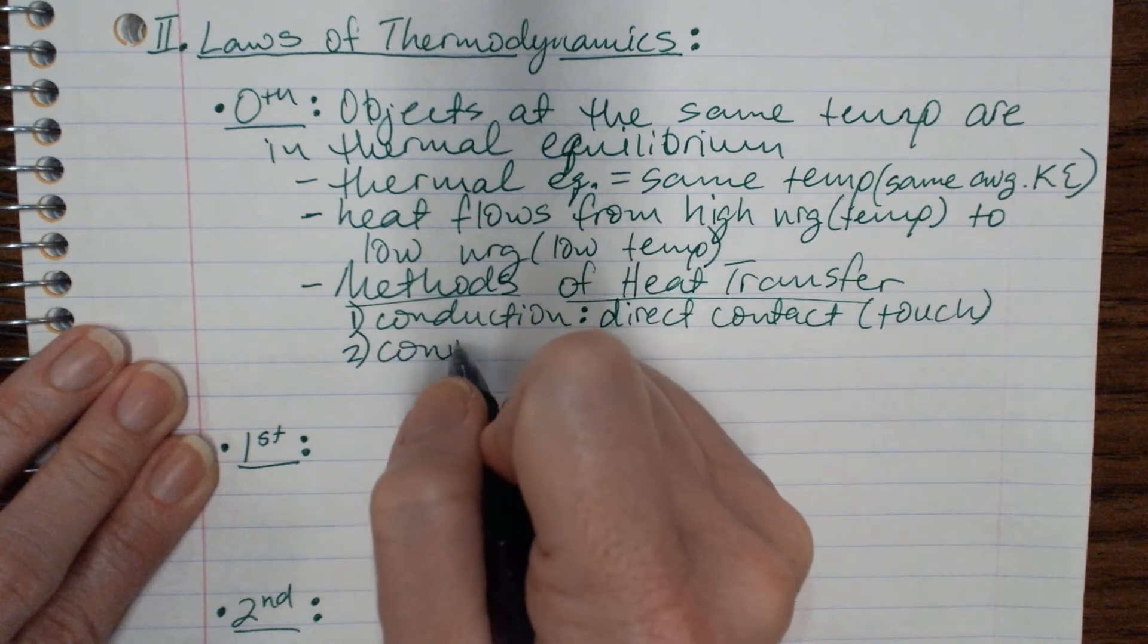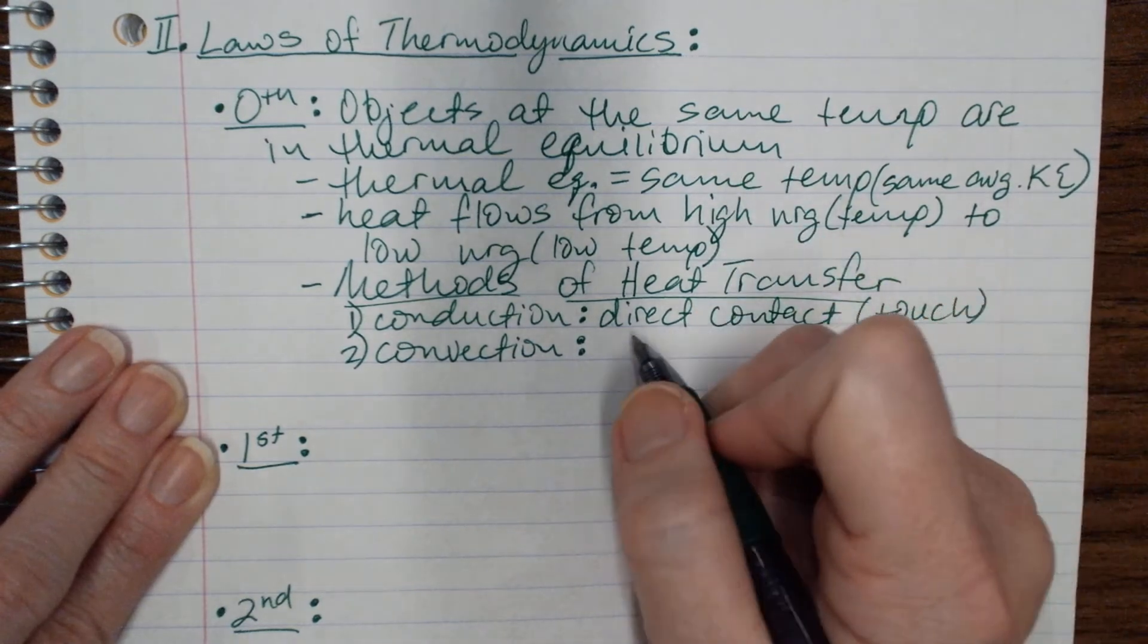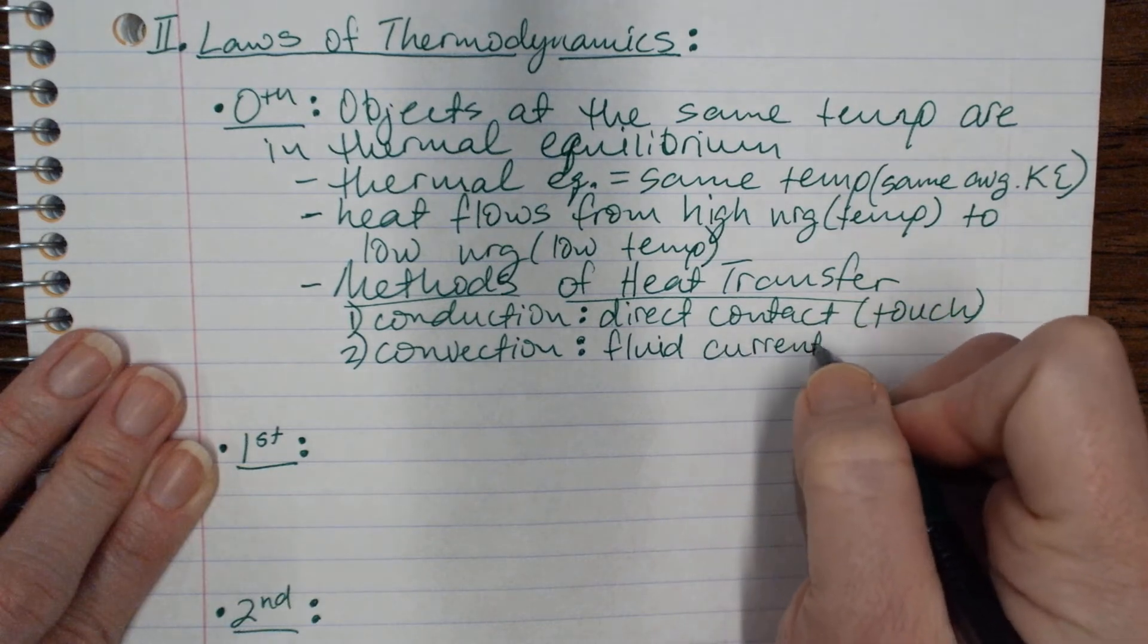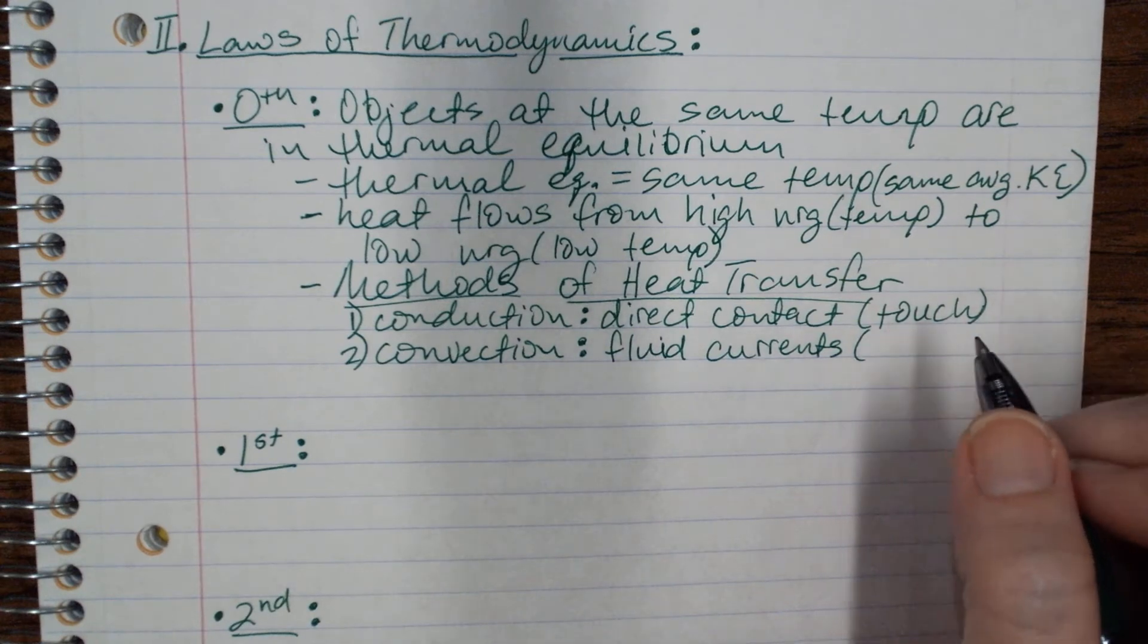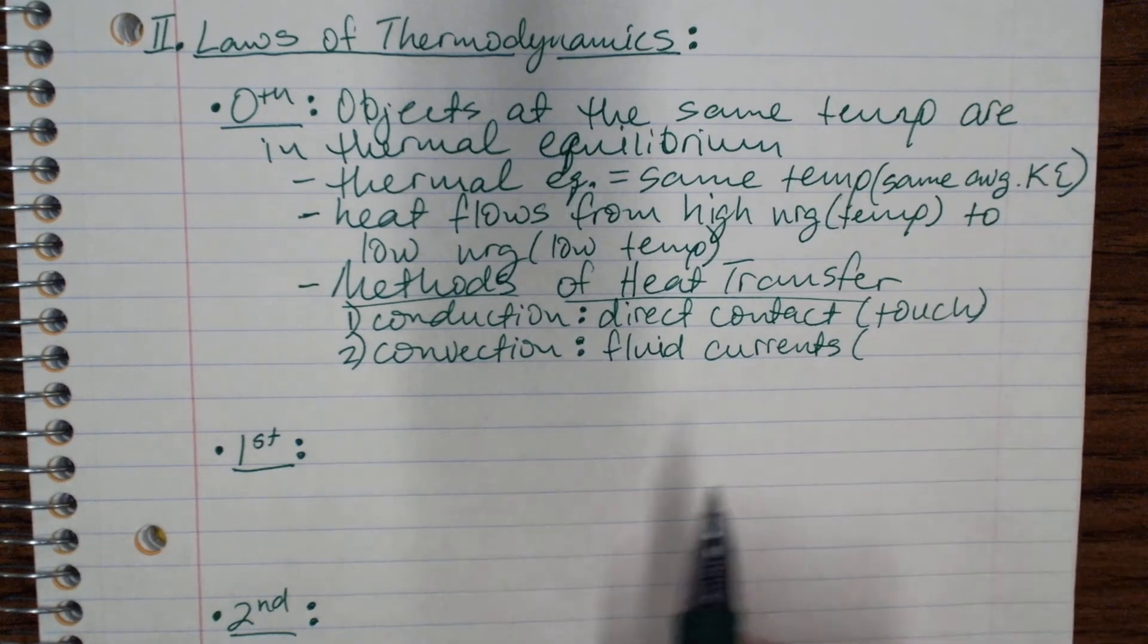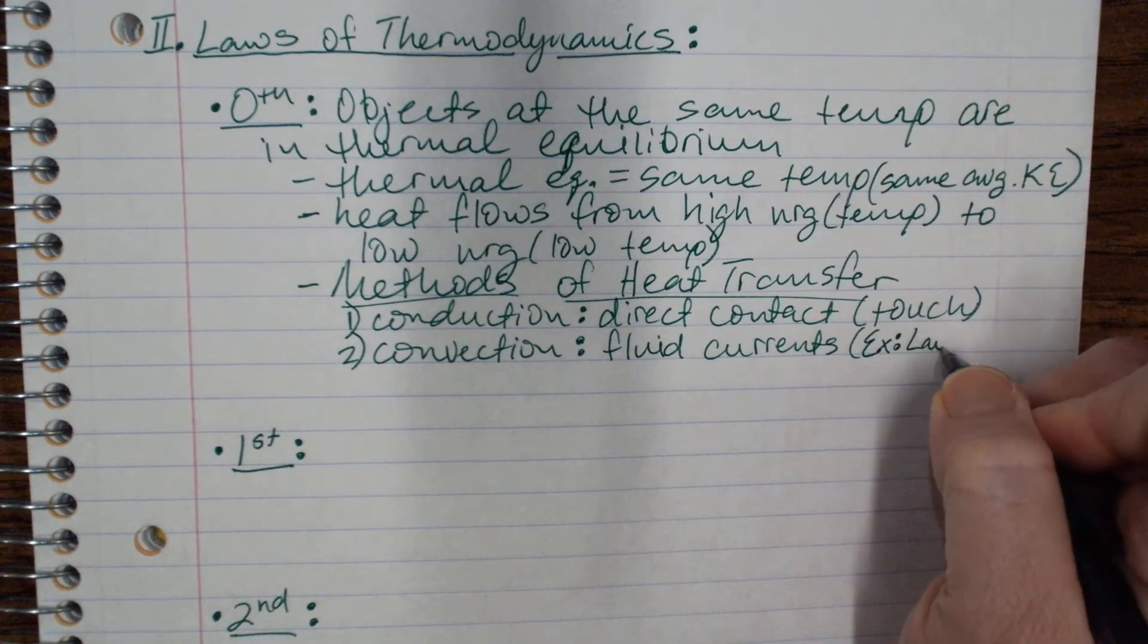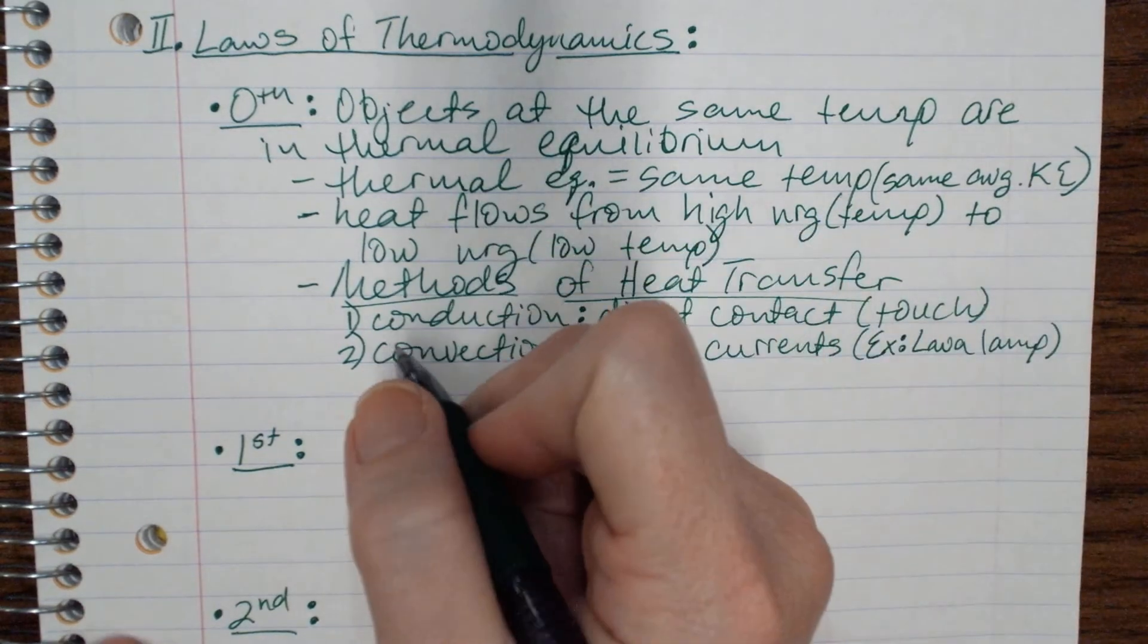Second one is called convection. And this is when heat flows due to fluids. So fluid currents. So the only things that are fluid are going to be liquids and gases. So conduction is typically direct contact. You have to touch it. That's going to be solids and liquids mainly. Convection is fluid currents. So the only things that are fluid are liquids and gases. And so an example of this might be if you've ever seen a lava lamp. That'd be a good example of convection heat by fluid currents.